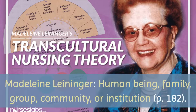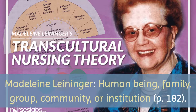Madeleine Leininger defined person as a human being, or a family, a group, a community, or an institution — a very wide scope of definition. Once you learn about her theory, you'll see how she applies what the nurse does for that person when the person could even be considered an institution.